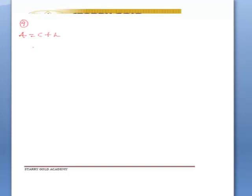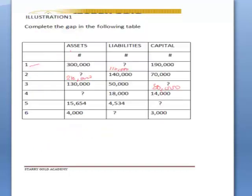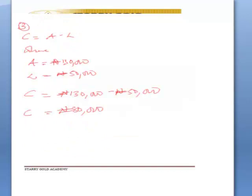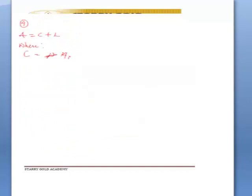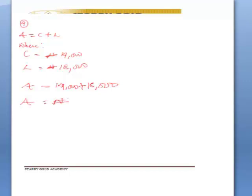C therefore will be eighty thousand. So question three, C is eighty thousand. Question four: we will be looking at assets again. Asset equals capital plus liability. C is fourteen thousand, L is eighteen thousand. Therefore A equals fourteen thousand plus eighteen thousand, which is thirty-two thousand.